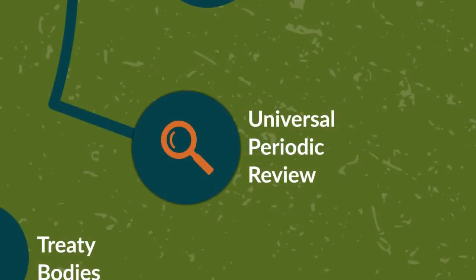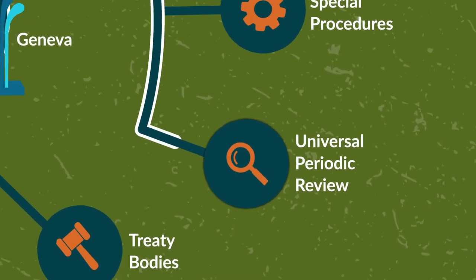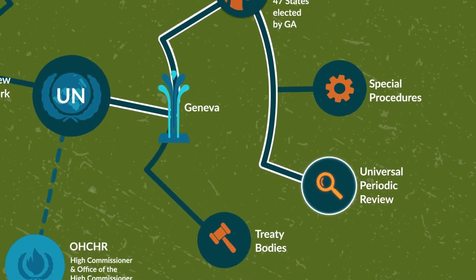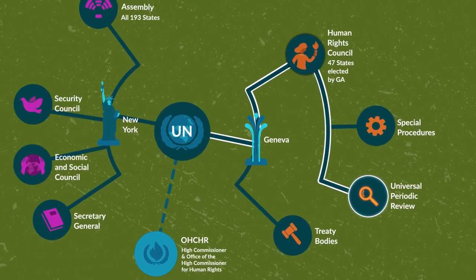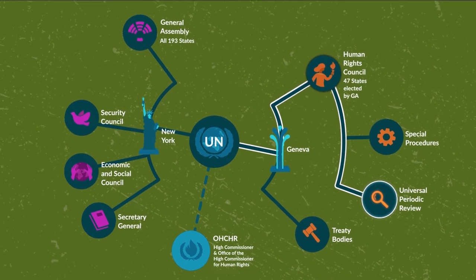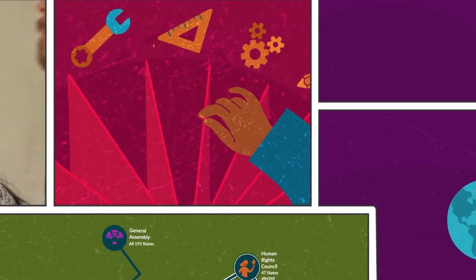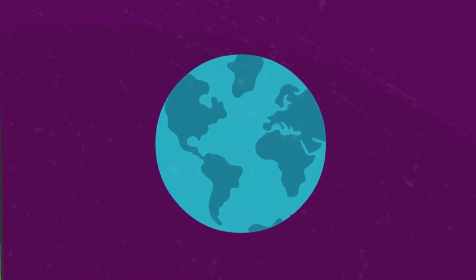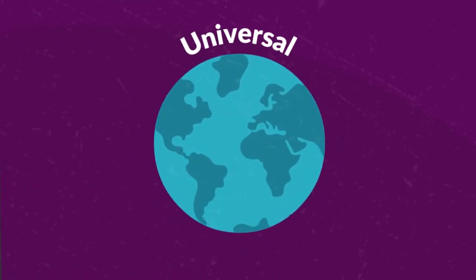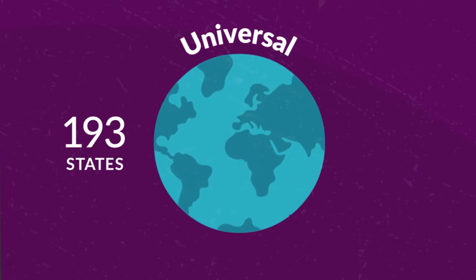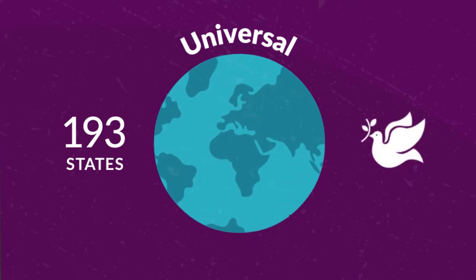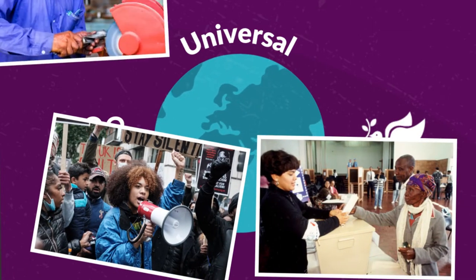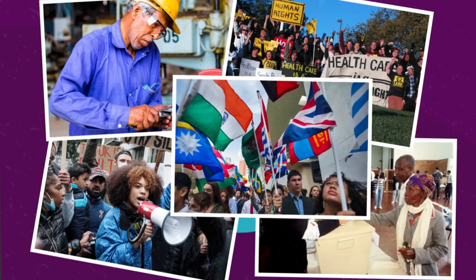The Universal Periodic Review, or UPR, is one of the most accessible human rights mechanisms of the United Nations Human Rights Council. It's a useful tool for human rights defenders, and the reason is right there in the name. It is universal, covering all 193 states and all human rights – civil, political, economic, social and cultural.